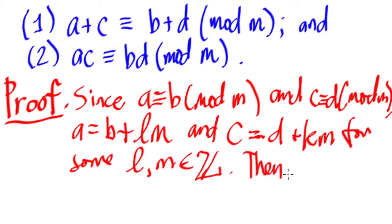We know this is true: since A is congruent to B mod M, dividing A by M gives remainder B for some integer L. Likewise, dividing C by M gives remainder D for some integer K, where M is the divisor. We can think of this as theorem 3.1 or simply the division algorithm.